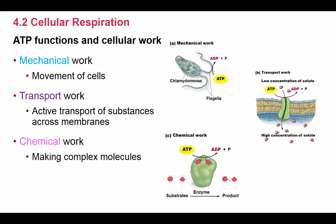ATP serves some very basic functions in our cells. First, ATP is used for mechanical work — meaning movement, such as powering flagella or cilia, which only work if ATP is present. Second, ATP functions in transport work, like active transport — pumping substances across a membrane from low to high concentration. Third, ATP is used in chemical work, such as making carbohydrates, proteins, and nucleic acids.